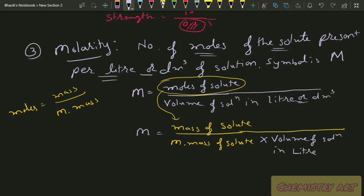So the full formula becomes: Molarity = (mass of solute / molar mass) divided by volume of solution in liters. For molar mass, you find the molecular mass of the compound. For example, if one mole of sugar is dissolved, you just directly put the value.